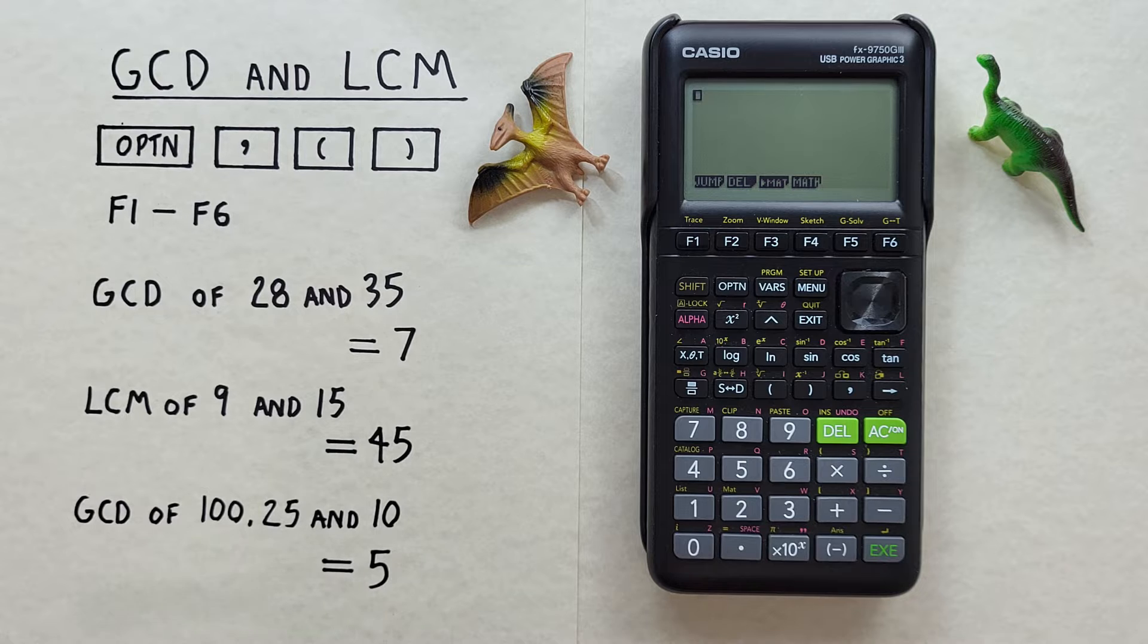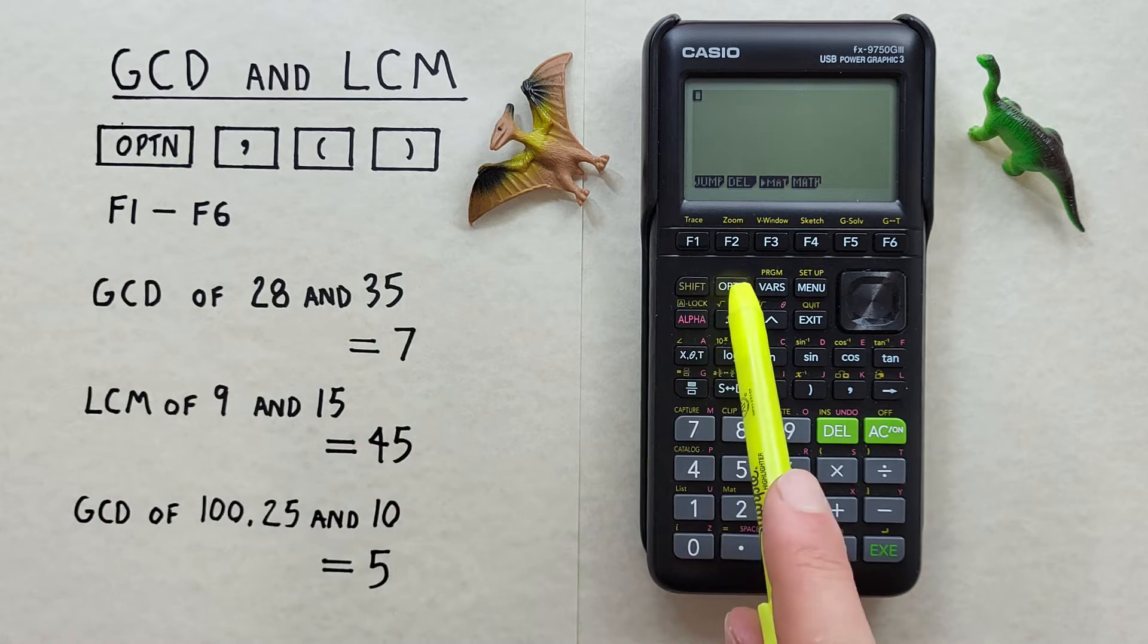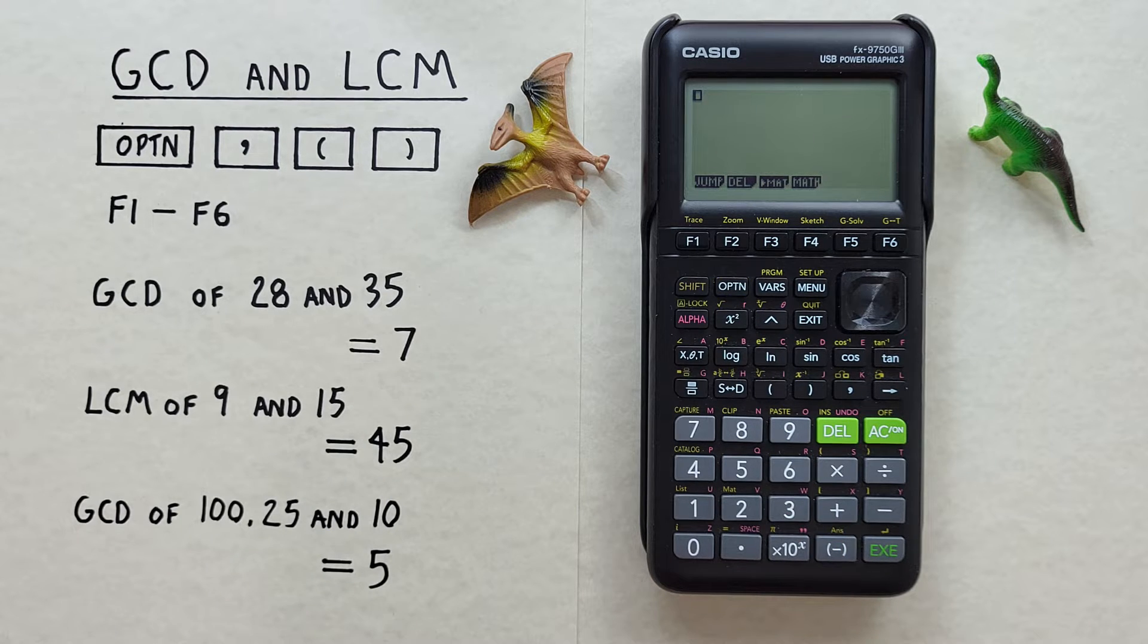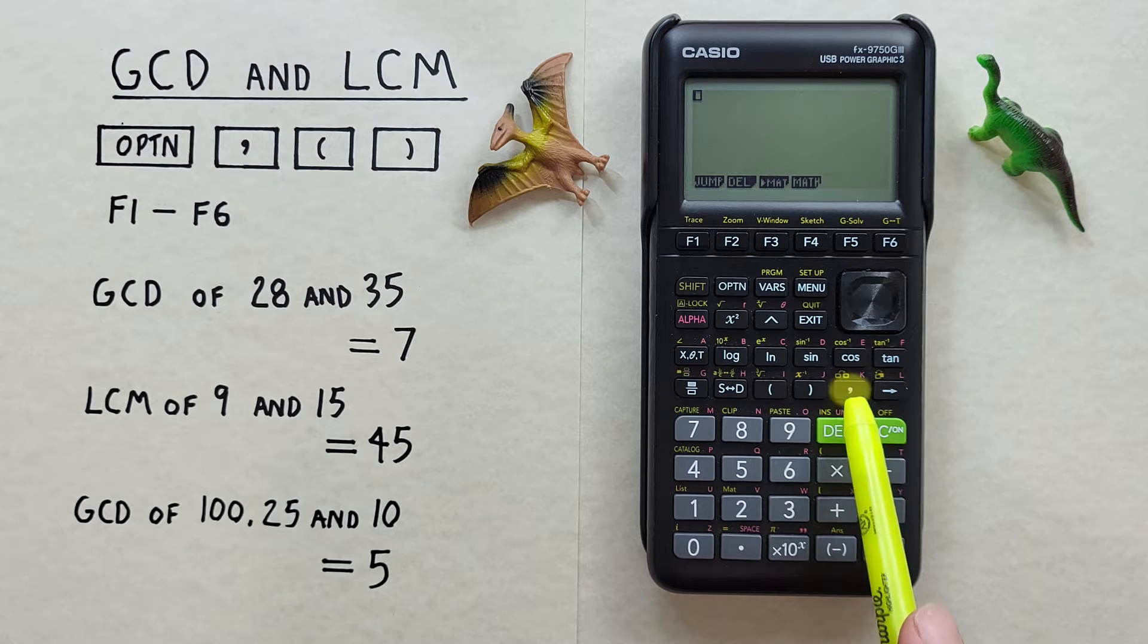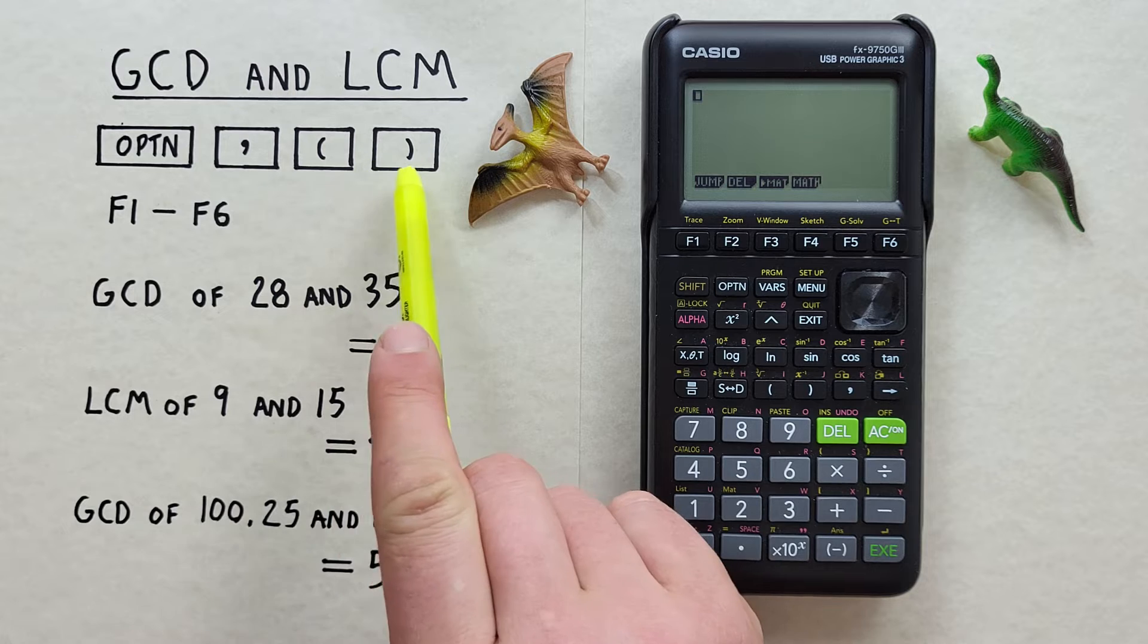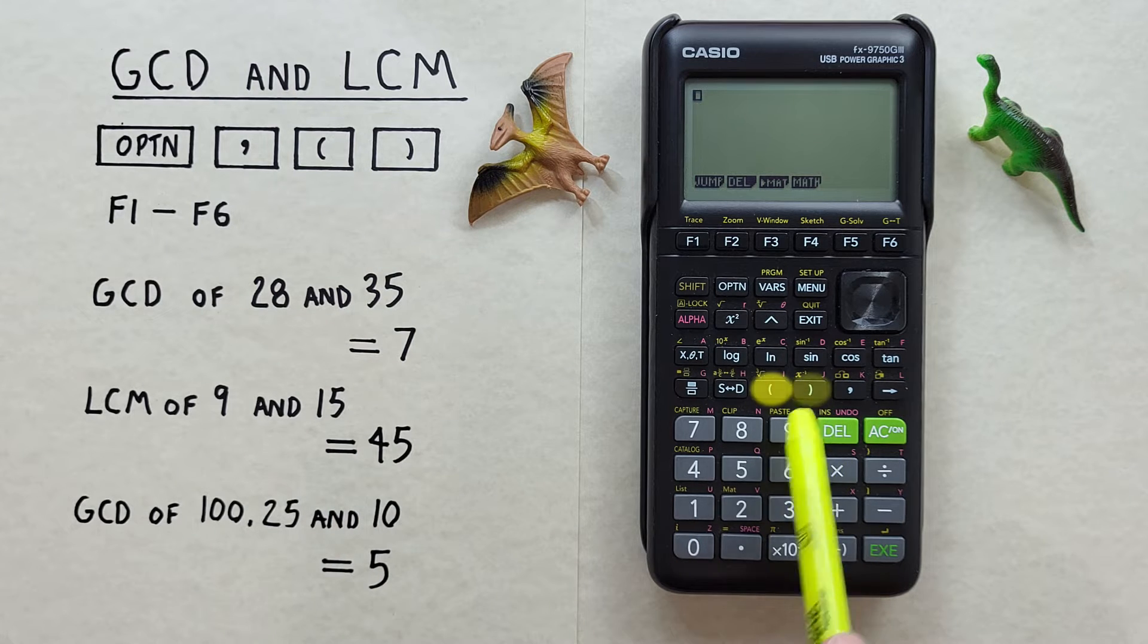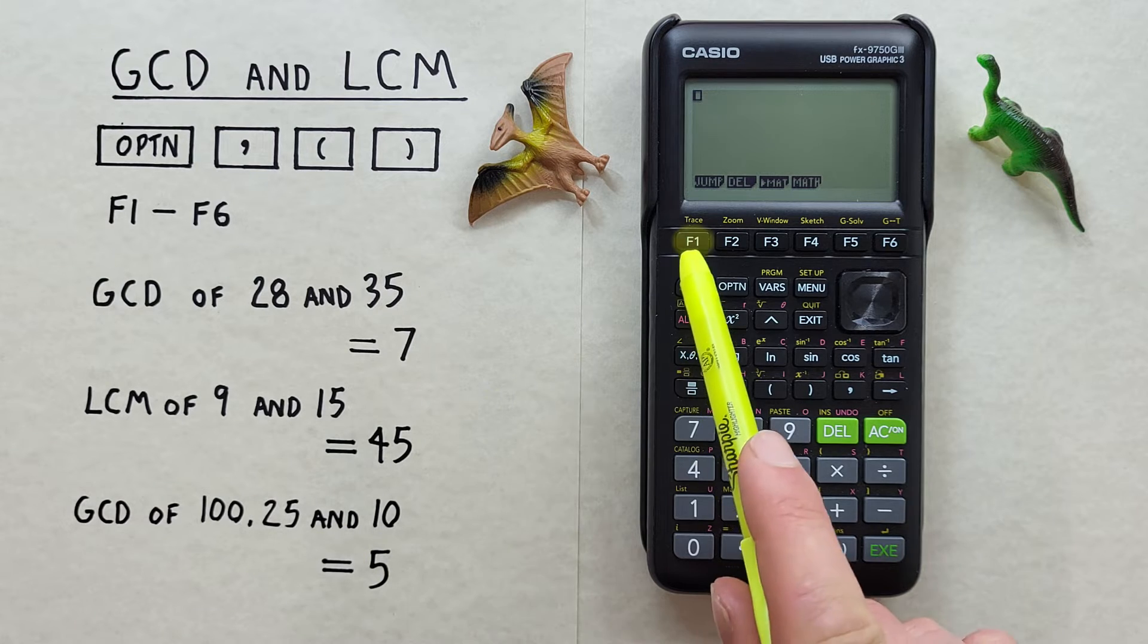To do this, we'll use the Option key that looks like this, located here, the Comma key that looks like this, located here, the Bracket keys that look like this, located here, and the F1 through F6 keys, located across the top here.